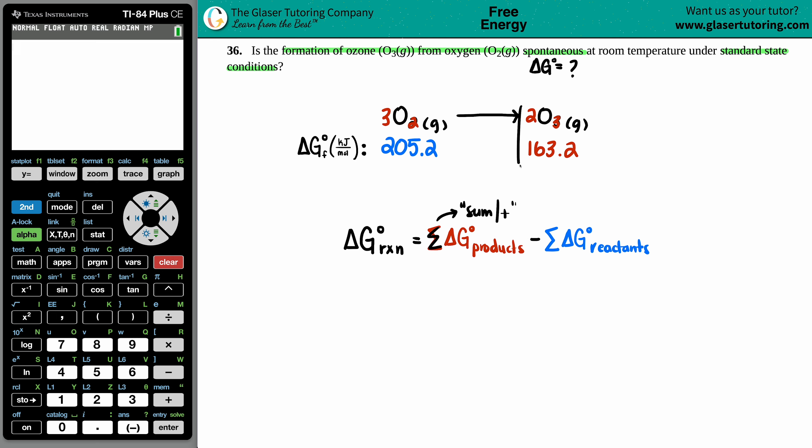So we're going to add up all the delta Gs of the products and subtract them from the sum of all the delta G of the reactants. But now here's the thing. Are these values going to be the same or are they going to be different? Well, it all depends on the balanced equation. That's why we had to write it, right?